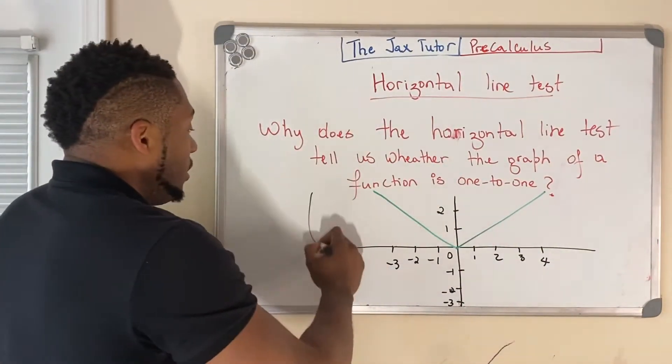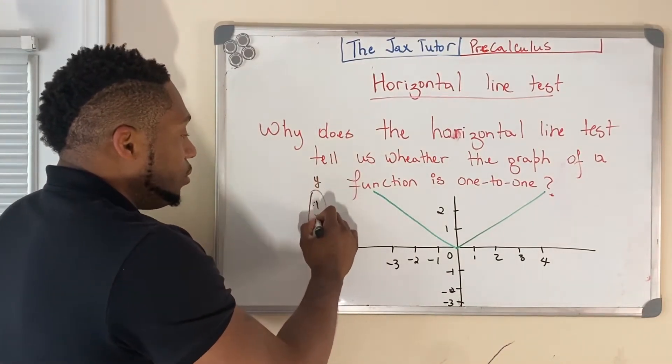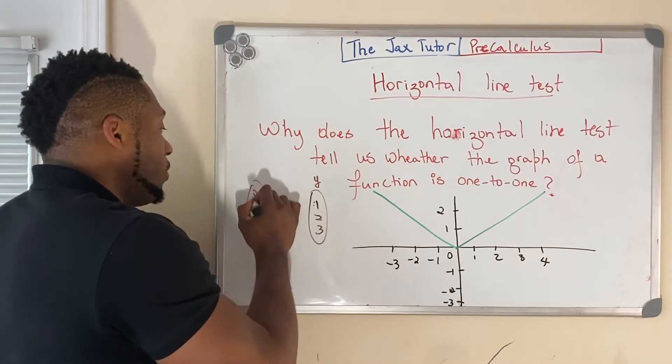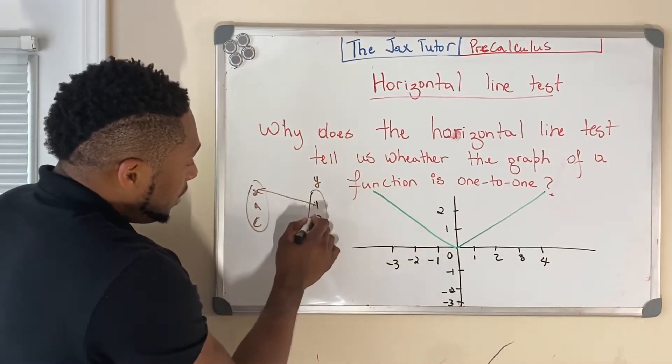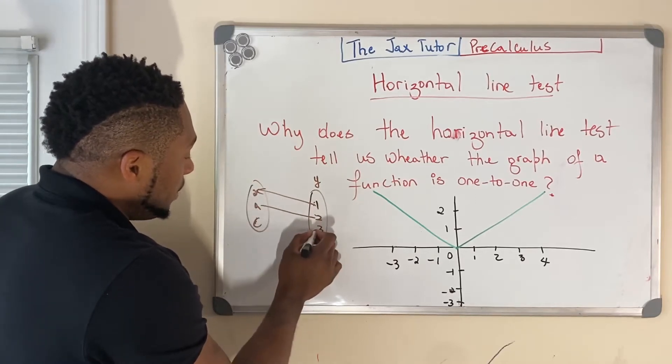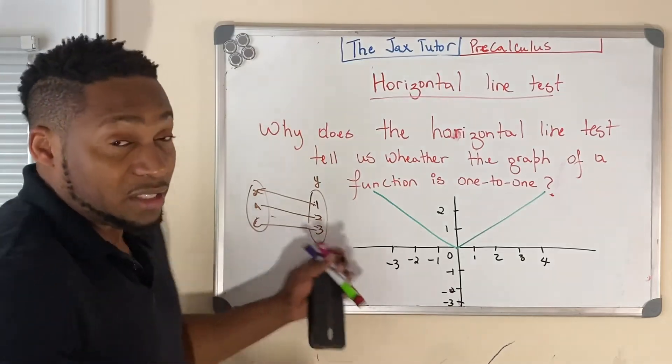So, that means each one of the y values, the output, so let's say we had 1, 2, 3 here, and the inputs were A, B, C. Each one of them is only associated with one input. So, that means it cannot associate to this and this at the same time. So, that makes it one-to-one.